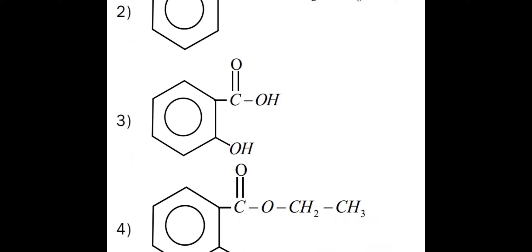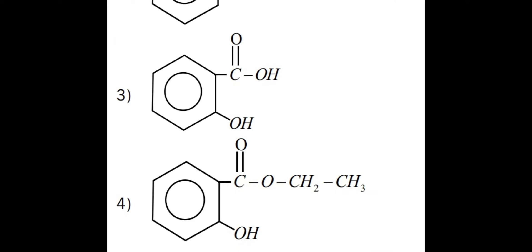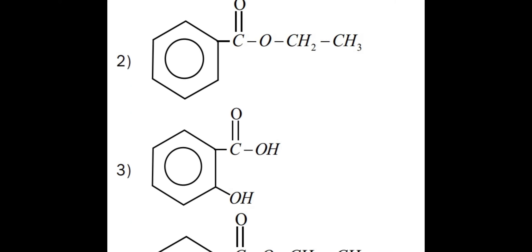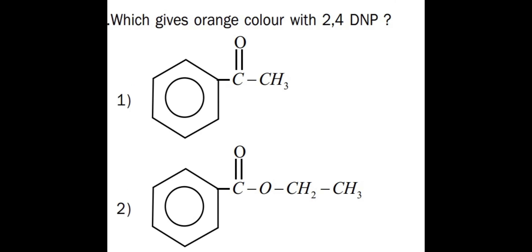Option three is an acid, and option four is again an ester. So the answer is straightforward: the 2,4-DNP test is given by carbonyl compounds — aldehydes and ketones — and the first compound is your answer.